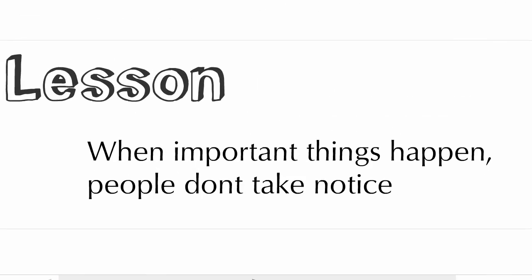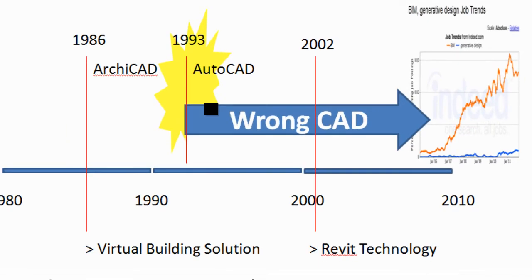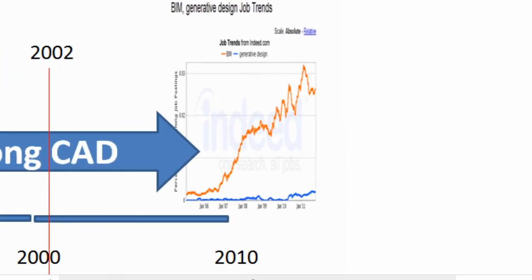The lesson learnt here is that when important changes happen, people do not take notice. Not only people, even companies do not. Autodesk did not. It took them more than a decade for its value to be observed. So in 2002, Autodesk acquired Revit Technology Corporation at an expense over 100 million dollars, only after its value was obvious to practicing architects. Of course they could not call it Virtual Building Technology. That name was taken by Archicad.